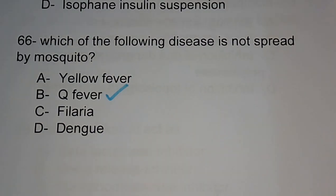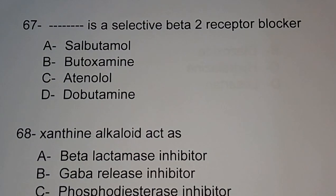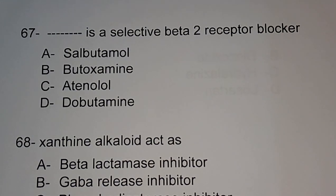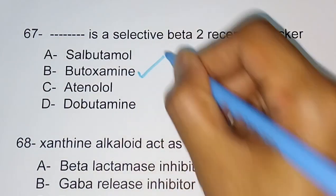Question number 67: which is a selective beta-2 receptor blocker? Options are salbutamol, butoxamine, atenolol, dobutamine. We know atenolol is a selective beta-1 blocker; the answer here is butoxamine — butoxamine is a selective beta-2 receptor blocker.